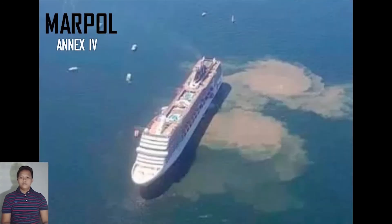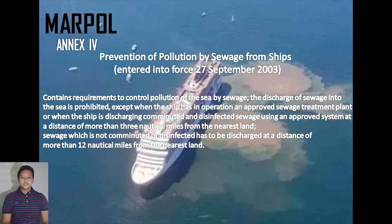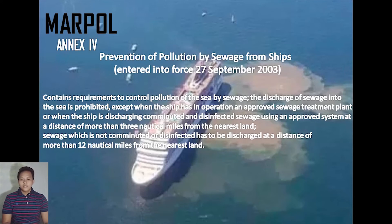Annex 4 — Prevention of Pollution by Sewage from Ships — entered into force 27 September 2003. It contains requirements to control pollution of the sea by sewage. The discharge of sewage into the sea is prohibited, except when the ship has in operation an approved sewage treatment plant, or when the ship is discharging comminuted and disinfected sewage using an approved system at a distance of more than 3 nautical miles from the nearest land. Sewage which is not comminuted or disinfected has to be discharged at a distance of more than 12 nautical miles from the nearest land.